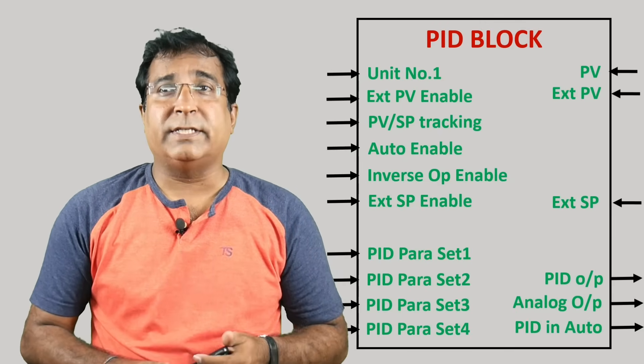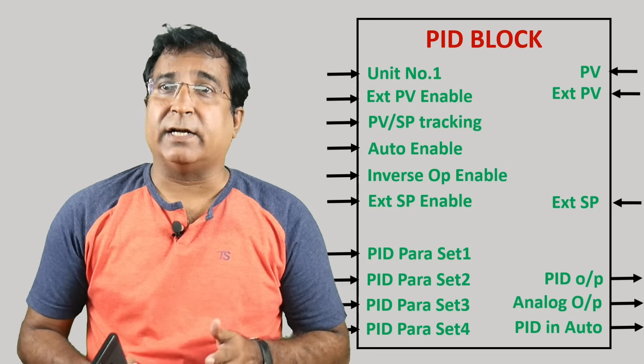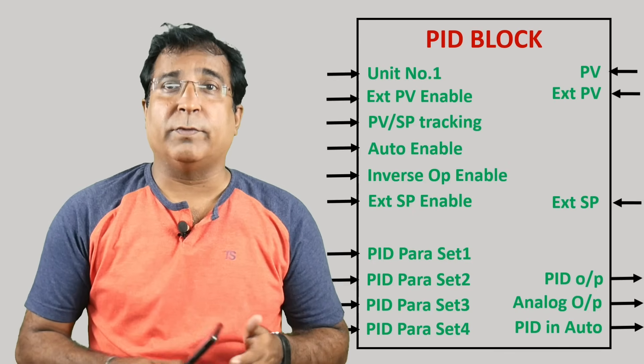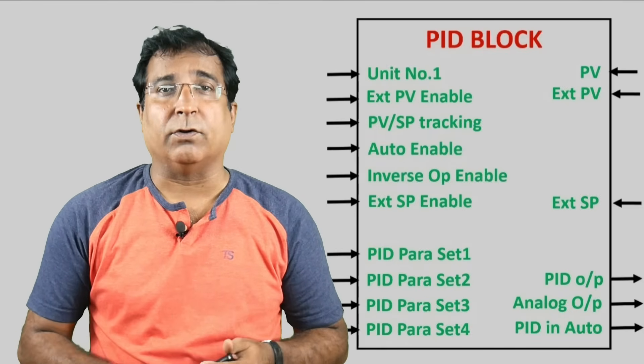Controlled auto mode. This is the logical one bit which indicates that controller is in auto mode. Zero means it is in manual mode. This bit can be used in any interlock.